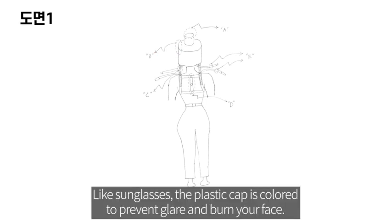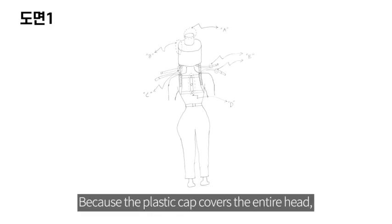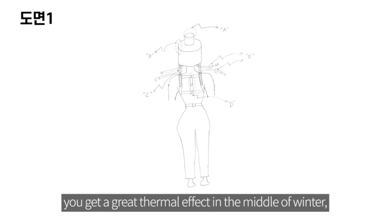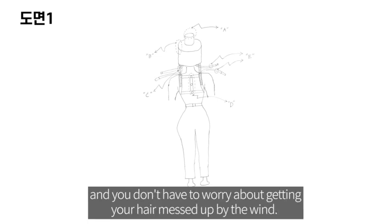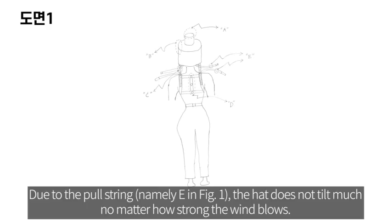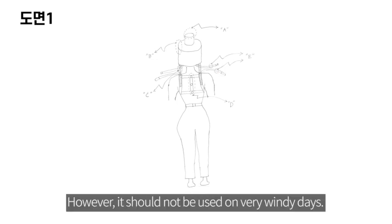Like sunglasses, the plastic cap is colored to prevent glare and burn your face. Because the plastic cap covers the entire head, you get a great thermal effect in the middle of winter, and you don't have to worry about getting your hair messed up by the wind. Due to the pole string, namely E in Figure 1, the hat does not tilt much no matter how strong the wind blows. However, it should not be used on very windy days.